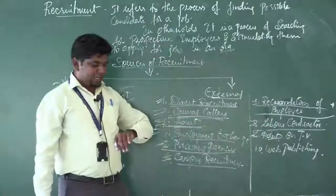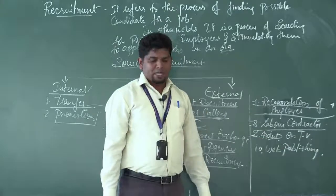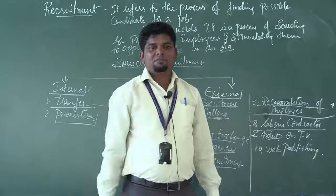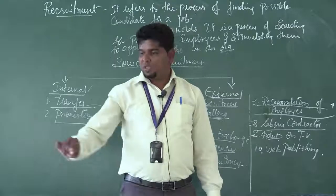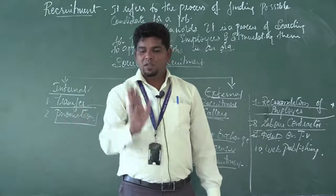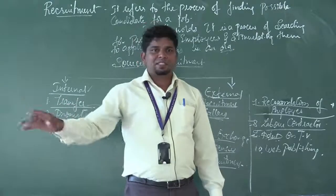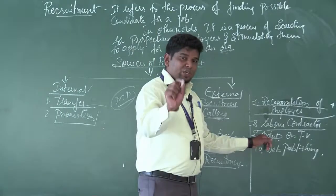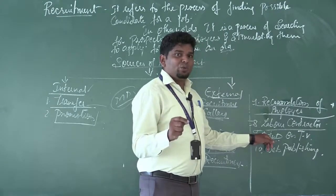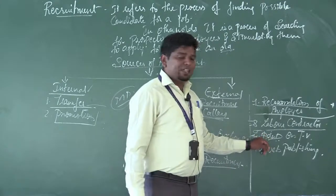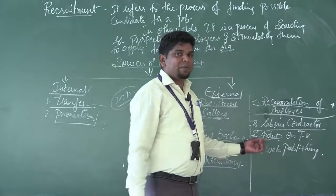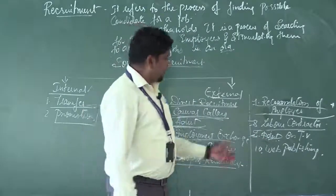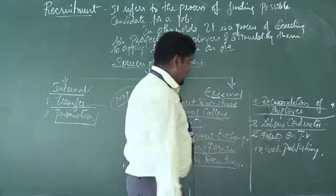The ninth source is advertisement on TV. Companies display slides on television showing vacancies such as Managing Director, Clerk, or Security, along with salary details including ESI and PF. Job seekers who see the advertisement call the displayed number. If the company finds a suitable candidate, they proceed accordingly.